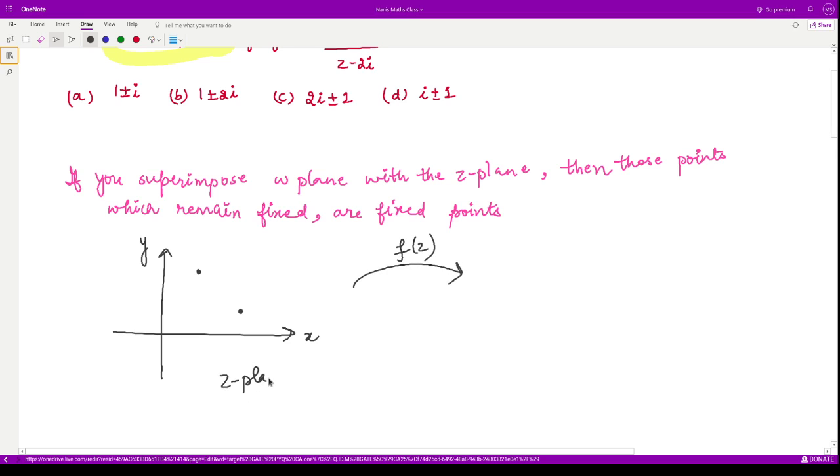So this is our z-plane and here we have our w-plane. We have this function w equals f(z), where this is u and this is v. If you write your function f(z) to be u plus i times v, then you have something like this.